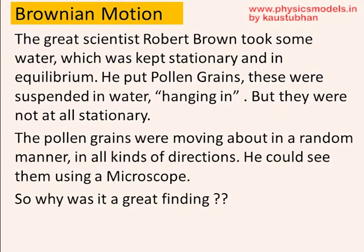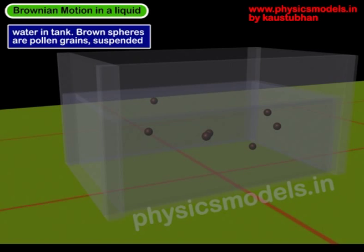In this video I'll talk about Brownian motion. In the year 1827, Robert Brown took a tank of water, kept it stationary and in equilibrium, and he put some pollen grains in it. The expectation was that the pollen grains suspended inside the water would also be stationary, but that was not the case. The pollen grains started moving in random fashion when observed through a powerful microscope. That was a great finding, because the pollen grains can move only if there is something that's moving there.